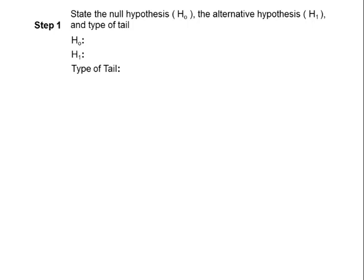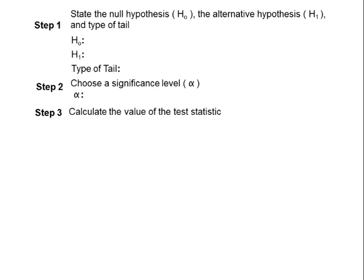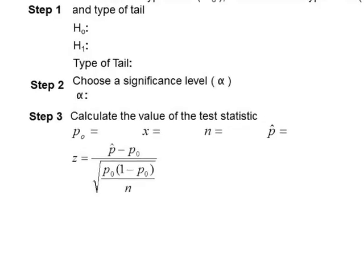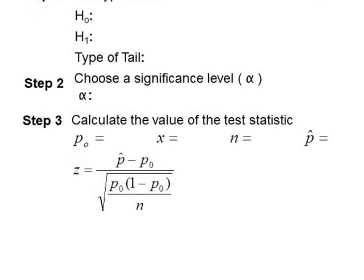The template for the six steps looks like this. Step one: we have our null and alternative and type of tail. Step two is our alpha level. Step three is the value of the test statistic — this will involve a formula. For population proportion, we use a z, and this is the formula. P sub zero is the null — the assumed value of the population proportion. x is the number of items that have the certain characteristic. n is the number in the sample. And p-hat is x divided by n, the sample proportion.